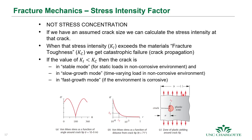Looking at the stress distribution around a crack tip under applied load, we can see the von Mises stress zone at the crack tip for a ductile material. Plotting von Mises stress versus distance from the crack shows extremely high stresses right at the crack tip, distributed in the characteristic lobed pattern. This can produce plastic yielding at the crack tip due to those high stresses.